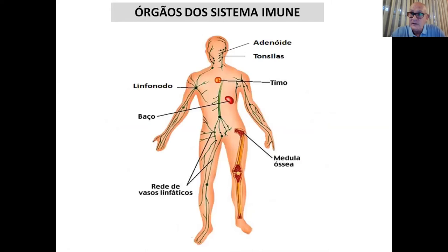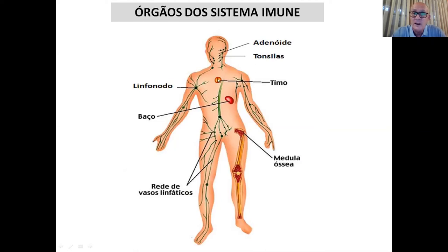Essas células, além de circularem no sangue, moram nos órgãos linfóides. Os fundamentais para a geração e diferenciação dessas células — chamados órgãos linfóides primários — são a medula óssea, onde nascem todas as células sanguíneas, inclusive eritrócitos, megacariócitos e todos os leucócitos, e o timo, importante para amadurecer a célula T, que tem justamente esse nome por ter que passar pelo timo para ter capacidade funcional.